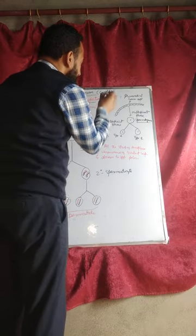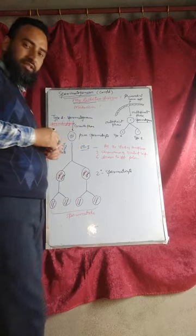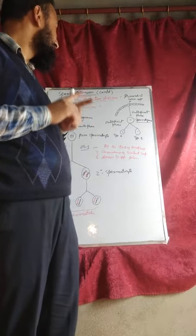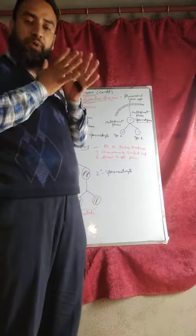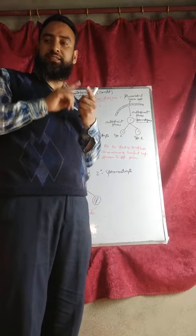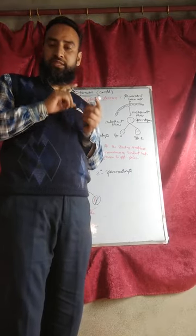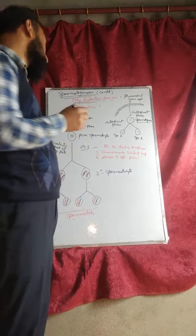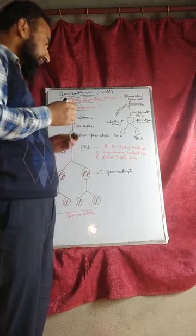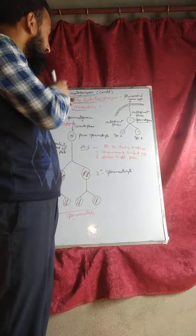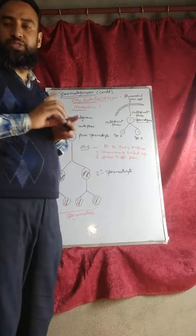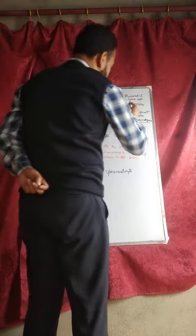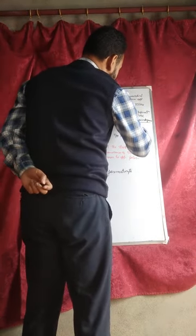Why does reductional division occur? Reductional division of chromosomes takes place to prevent a constant increase in the number of chromosomes after each fertilization. What is the mechanism by which this reduction in the number of chromosomes takes place? This is a seminiferous tubule, this is the germinal epithelium.